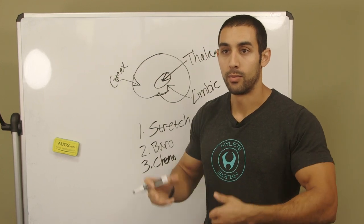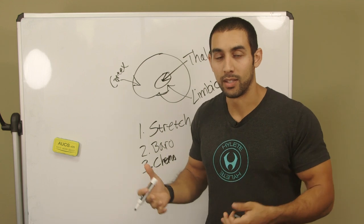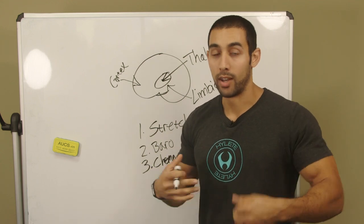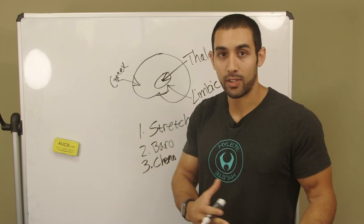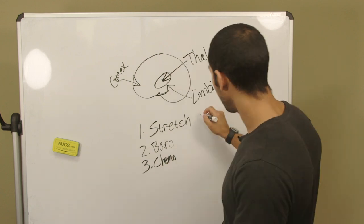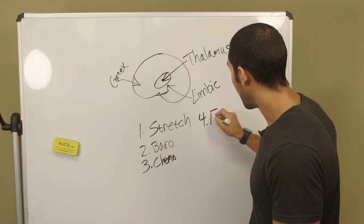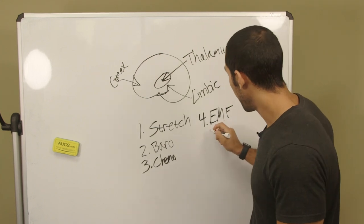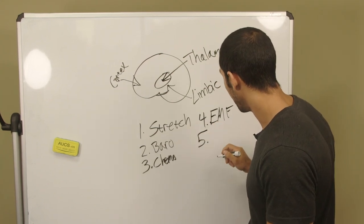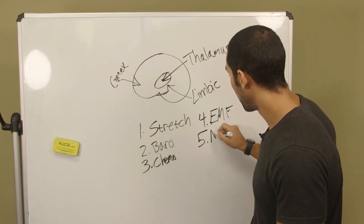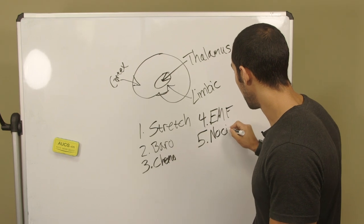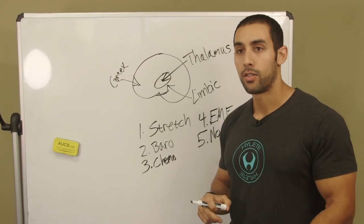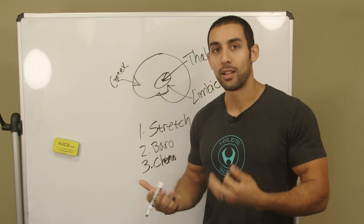We also have baroreceptors, these are pressure receptors, so our brain knows when there's pressure being placed on the tissue. We also have chemoreceptors, and these are chemical changes in the blood, whether it be from nutrition or maybe inflammation. Then the brain is going to know about it because of chemoreceptors. We have electromagnetic receptors, so your brain can actually sense EMF.